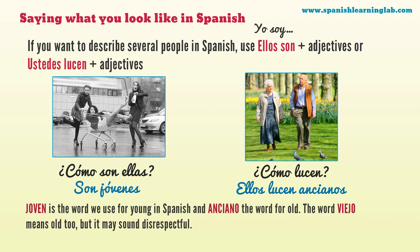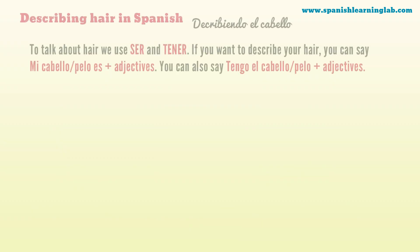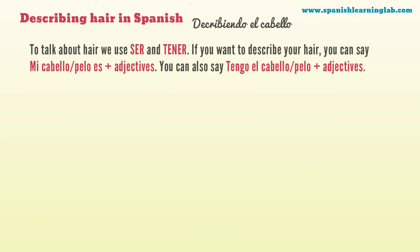Joven is the word we use for young in Spanish, and anciano is the word for old. The word viejo means old too, but it may sound disrespectful. Describing hair in Spanish — Describiendo el cabello.